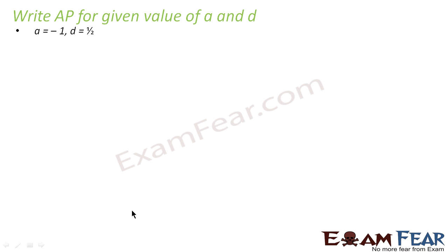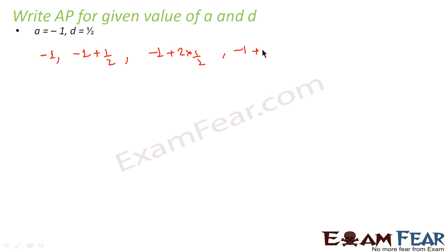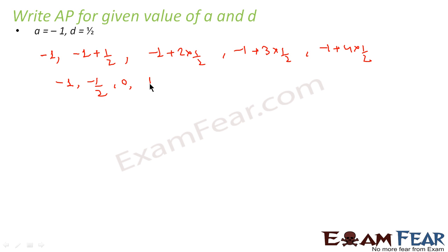Here the terms will be: a, a+d that is -1 + 1/2, a+2d that is -1 + 2×(1/2), a+3d that is -1 + 3×(1/2), a+4d that is -1 + 4×(1/2). This becomes: -1, -1/2, 0, 1/2, 1. So this is my series.